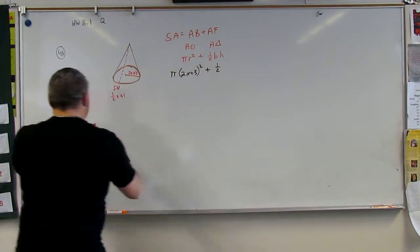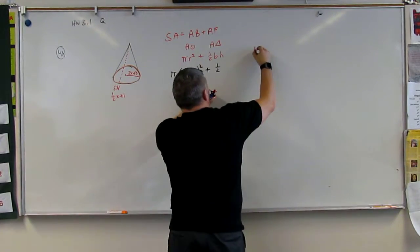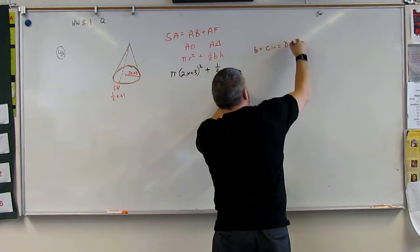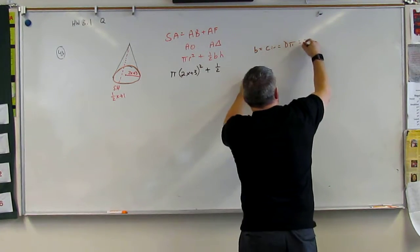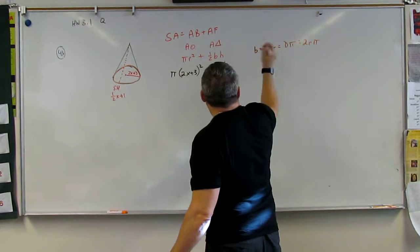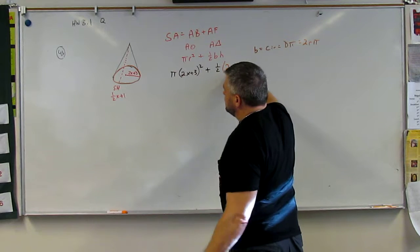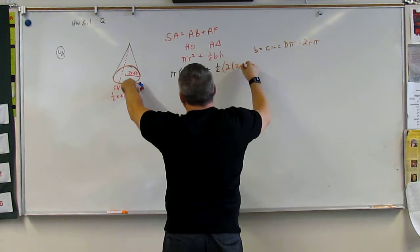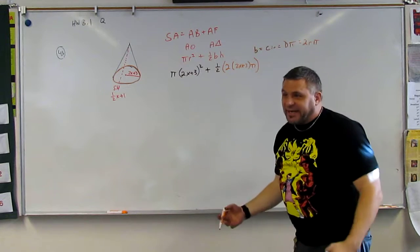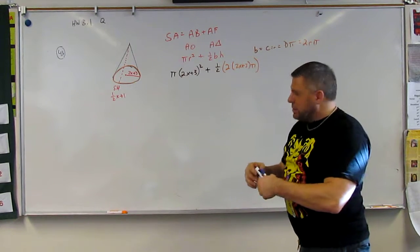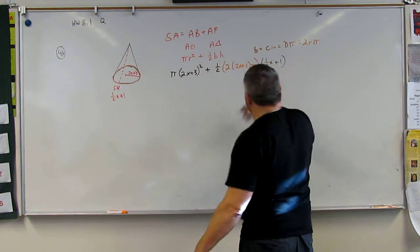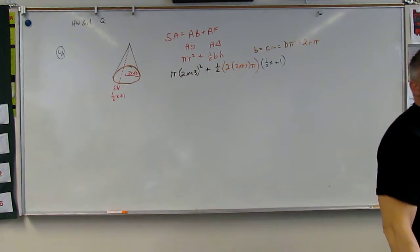So what is the circumference of the circle? The base is equal to the circumference, which is equal to d pi. And d is equal to 2r pi. So it's really 1 half times 2r, what's r? 2x plus 3 pi, times the slant height. And the slant height is 1 half x plus 1. That's a big equation.